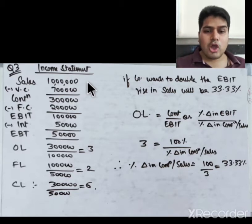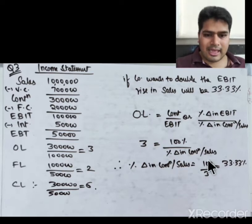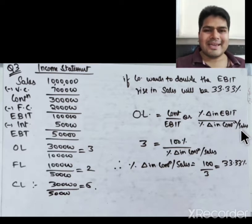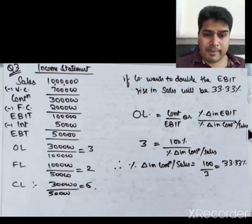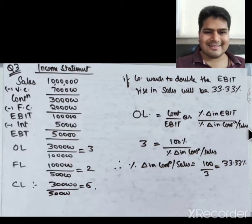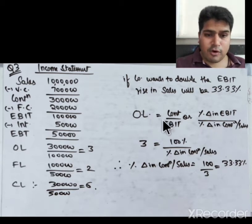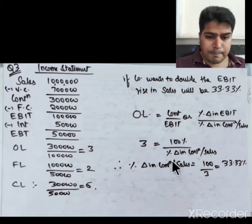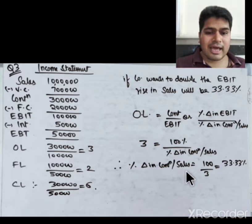Method 2 (direct): OL has a second formula — OL = % change in EBIT / % change in sales. We know OL = 3 and % change in EBIT = 100% (doubling). So % change in sales = 100 / 3 = 33.33%. This gives the answer directly.